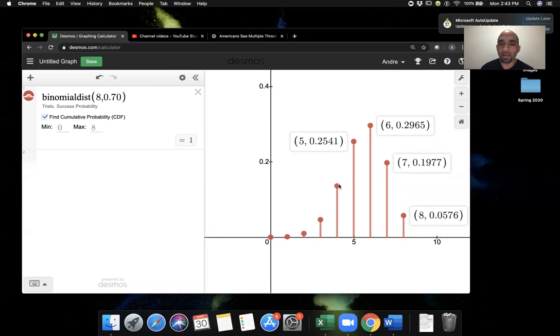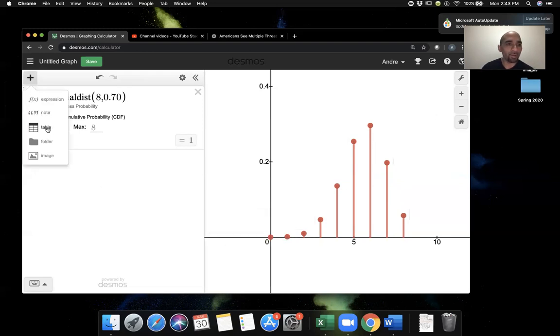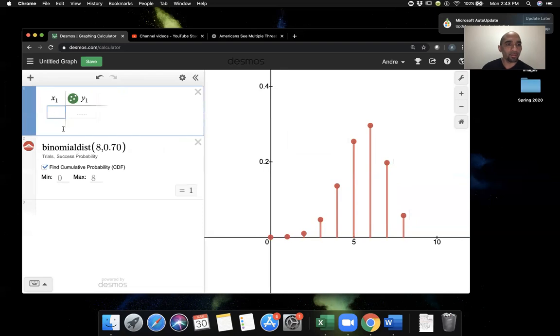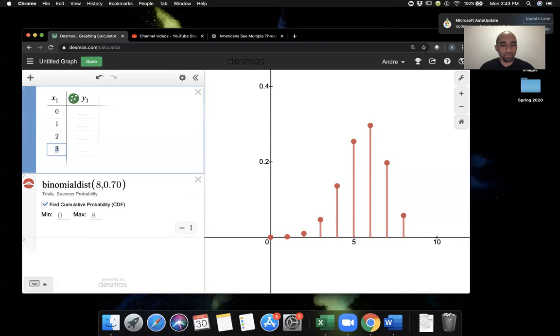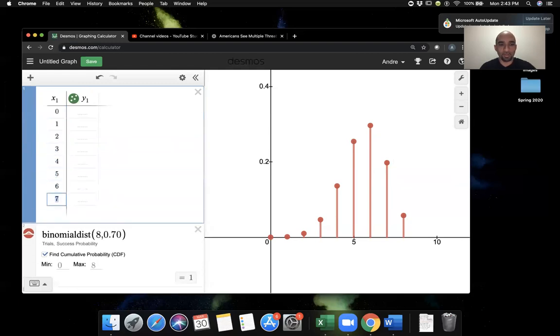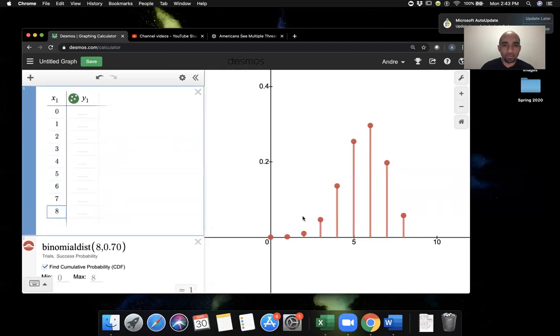So what we're doing by clicking on each of these individual points is actually constructing the table which contains the probability distribution. Let me show that to you in the table form. So I'm going to add a table here. And so I'm going to do 0, 1, 2, 3, 4, 5, 6, 7, 8. And now again, let's use the actual points here to get these values.